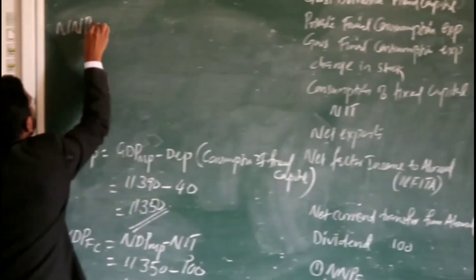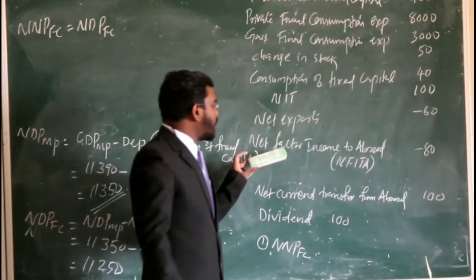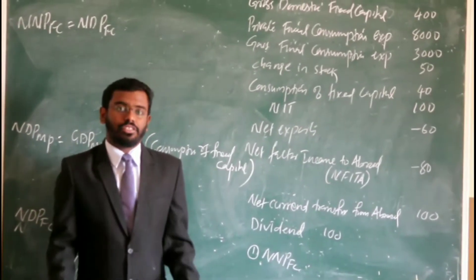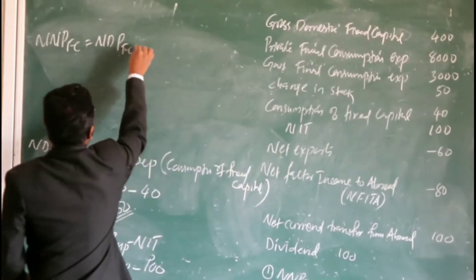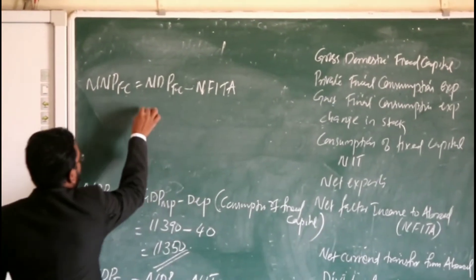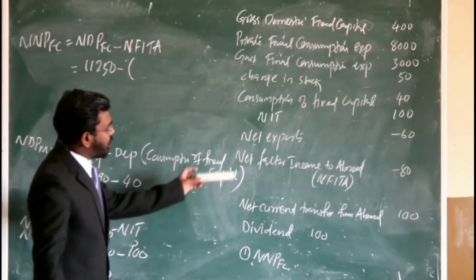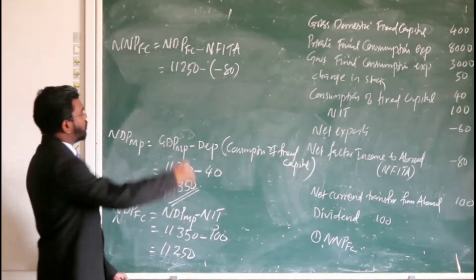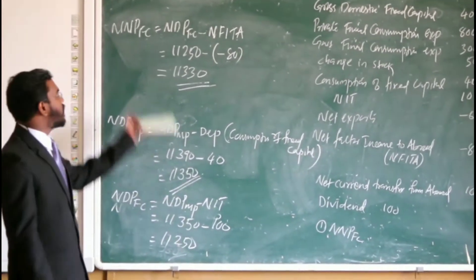NDPFC then NNPFC. NNPFC is equal to NDPFC. In the question it is given that net factor income to abroad — if we get net factor income to abroad, then we need to subtract; if we get net factor income from abroad, we need to add. So NNPFC equals 11,250 minus net factor income to abroad, which is minus 80. So 11,330 will be the right answer. That is national income.